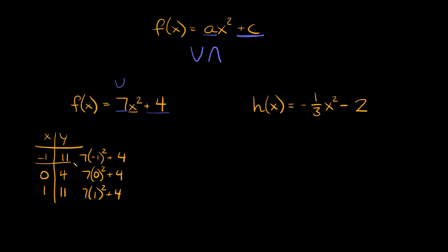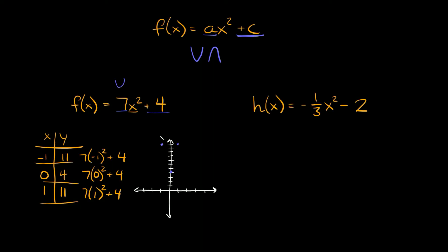So here are the three coordinates we're going to graph on the coordinate plane. The first point is negative 1, 11. Then 0, 4 — that's our y-intercept right there. And then 1, 11. Then we just connect the dots to get our parabola.